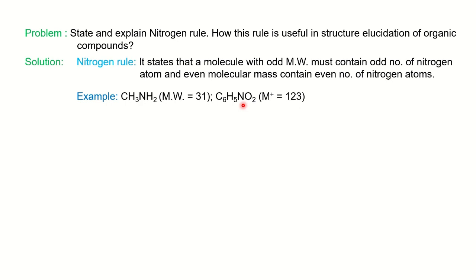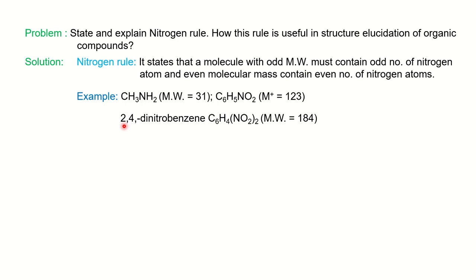In such cases of structural elucidation, where we don't know what the molecule is — only that it is a nitrogen-containing molecule and the molecular weight is given — with respect to that we can find the number of nitrogens, whether it is odd or even. Similarly, another example: 2,4-dinitrobenzene. You can notice here the molecular weight is 184, which is even. So we should have an even number of nitrogens — that is, either 2, 4, 6, and so on — and it has 2 nitrogen atoms.